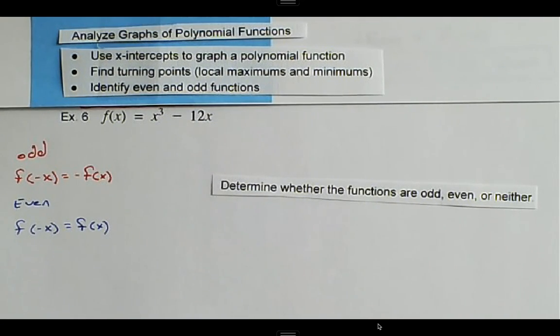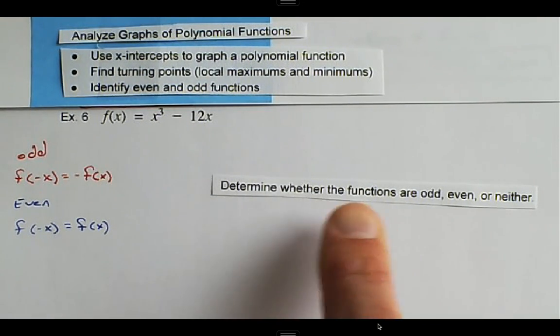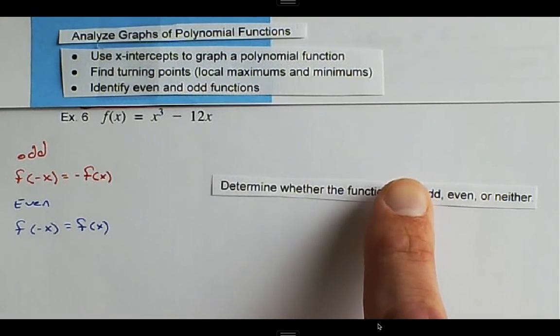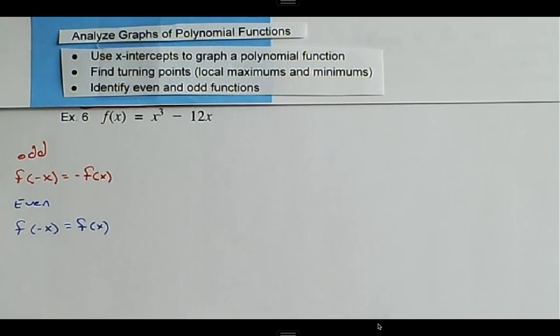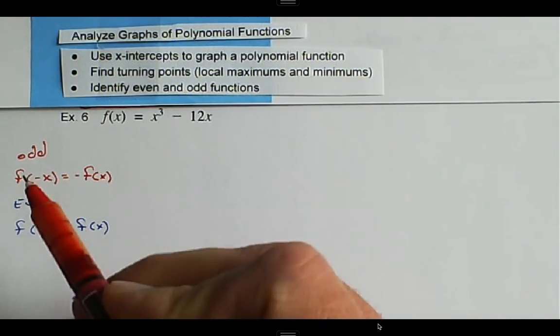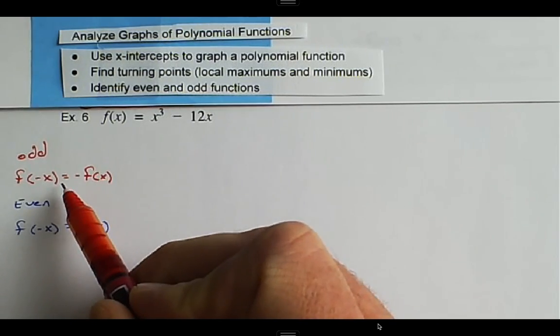We're analyzing graphs of polynomial functions and we want to algebraically identify even and odd functions. So determine whether the function is even, odd, or neither. The first check that we want to do is we want to check to see if this is an odd function.